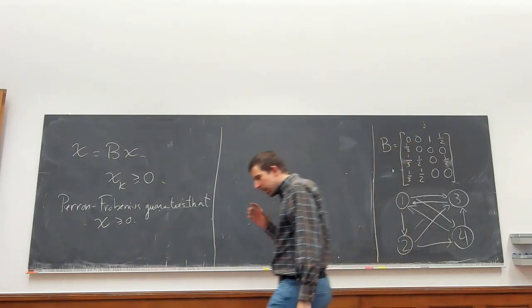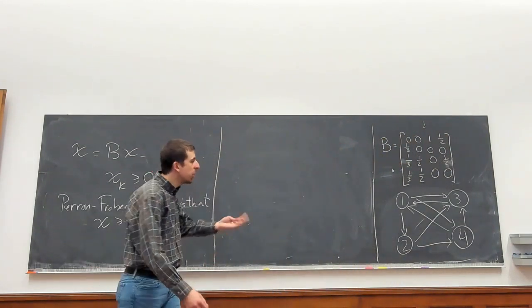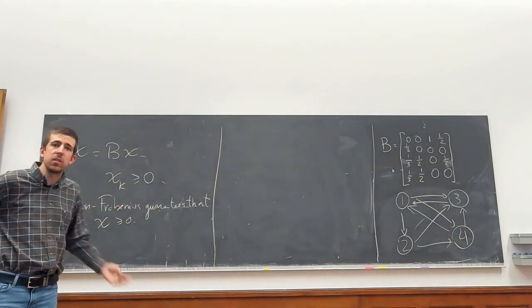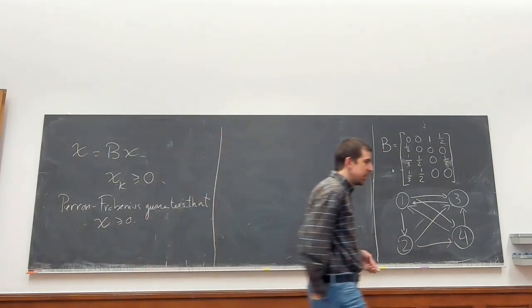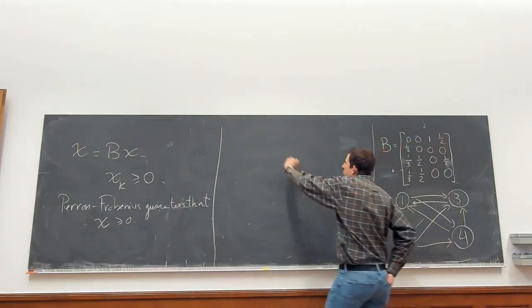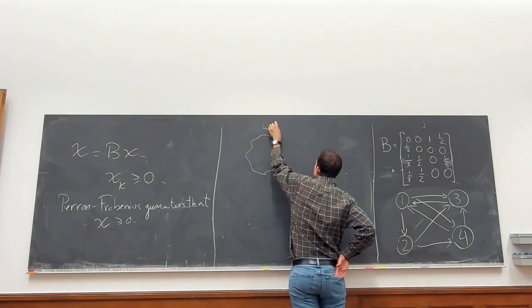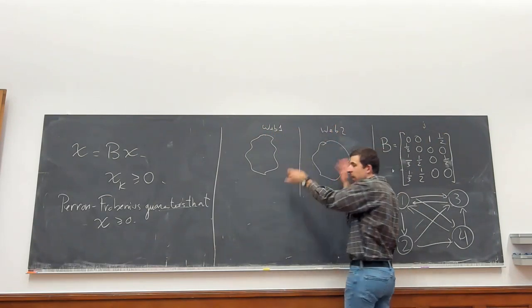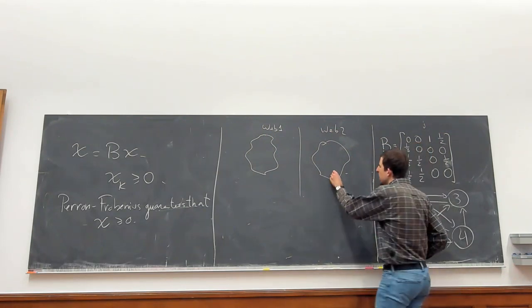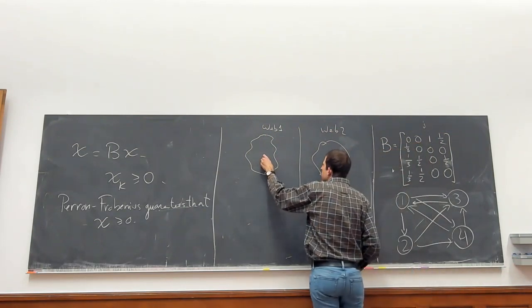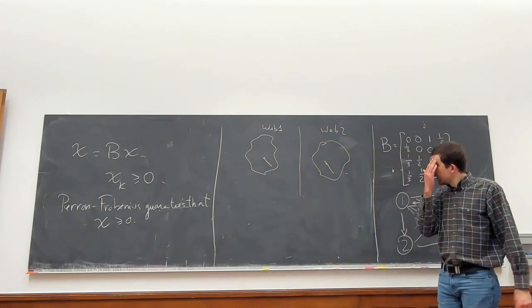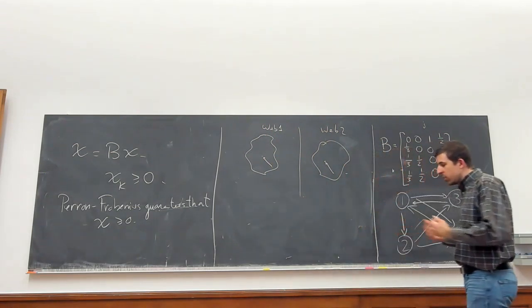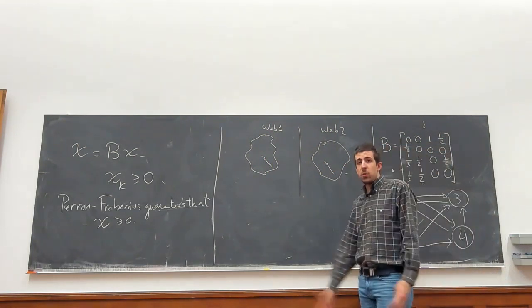Now I still haven't said everything. I still haven't explained why it could be that there's many solutions to this equation. It could be that there's many solutions and they have different meanings. Indeed there's issues that might arise. One potential issue is that, for example, I have two internets: web one and web two, and there's some type of wall between them so the internets can't talk to each other. There's no links in between. Pages link to each other in each one of the internets but they don't link to the other.